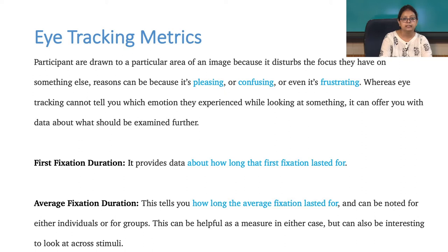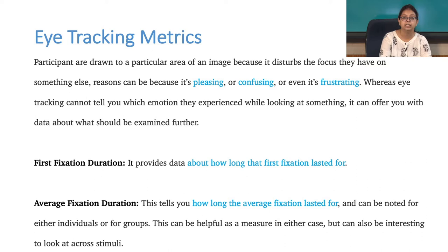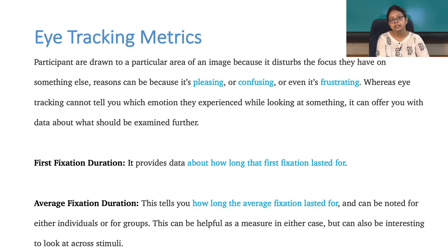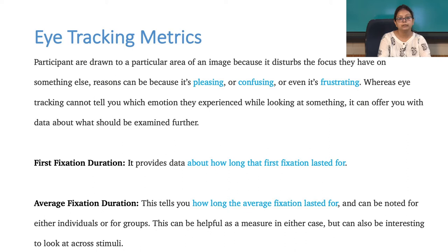Next is first fixation duration — it provides data about how long the first fixation lasted. Then there is average fixation duration, which tells how long the average fixation lasted and can be determined for either an individual or groups. This can be really helpful in baseline measurements and interesting to look at across several stimuli.